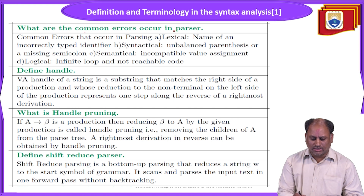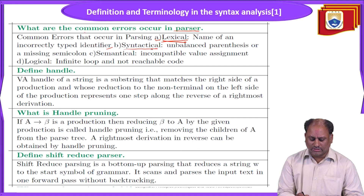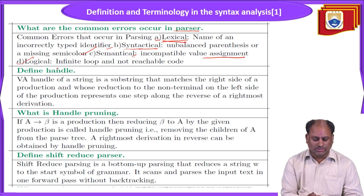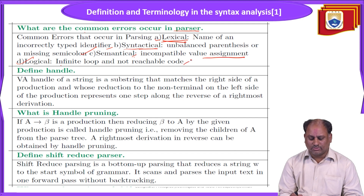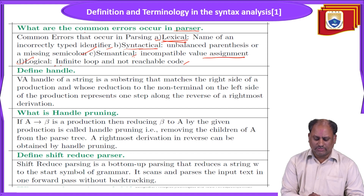Common errors that occur in the parser are: lexical — an incorrectly typed identifier; syntactical — unbalanced parentheses or a missing semicolon; semantical — incompatible value assignment; and logical — infinite loop or unreachable code. For example, code placed inside a while loop where the exit condition is never met causes infinite repetition and control never exits the loop. These are the different types of errors commonly occurring in the parser.